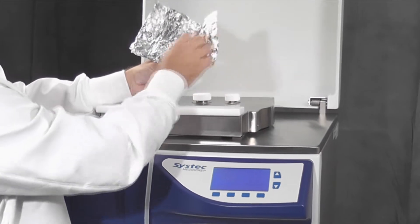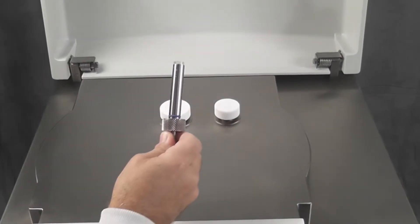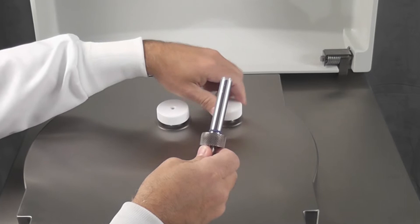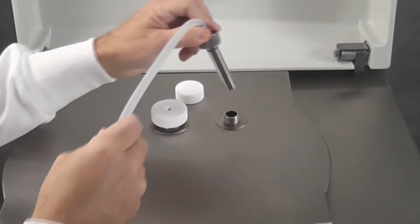After sterilization is complete, take the dispensing tube which has been autoclaved, remove the filling cap, and insert the dispensing tube.